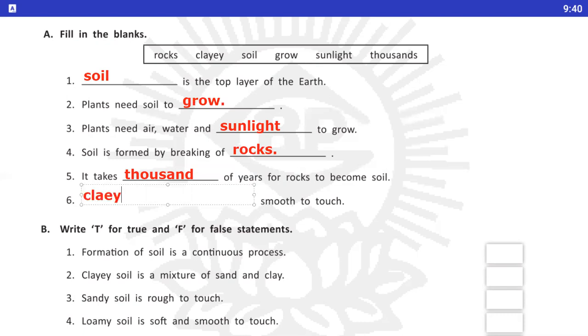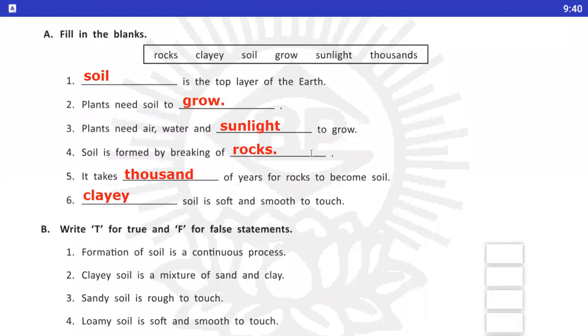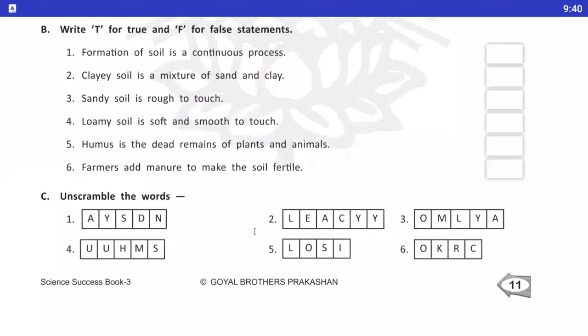Now, question Number B. Write T for true and F for false statements. Number 1, Formation of soil is a continuous process. Soil formation joe hai woh continuous process hoota rata hai? Yes, it is true. Number 2, Clay soil is a mixture of sand and clay. No, it's false.